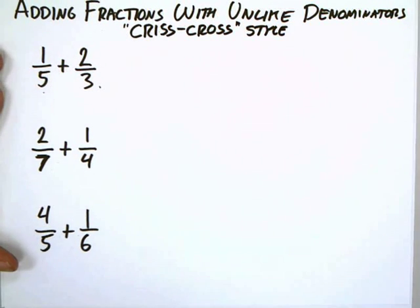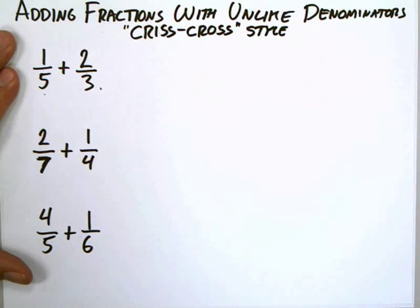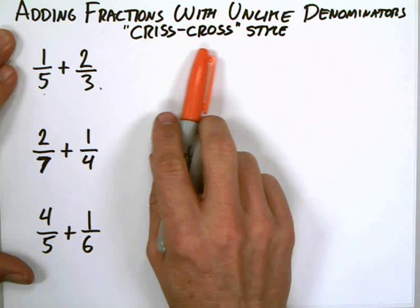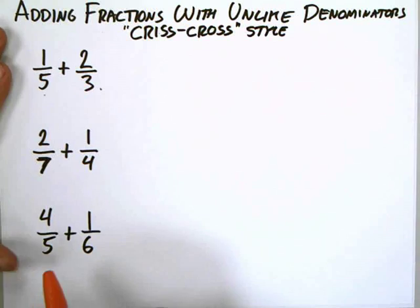All right, we are going to add some fractions with unlike denominators now, and unlike ways we've done it in the past, in this situation we're going to use a different style called crisscross style. So rather than find common denominators, we're just going to use this crisscross style to immediately get the result, and then we'll take a look at whether or not we need to simplify.